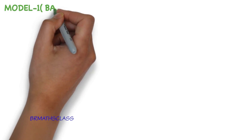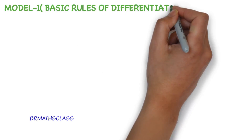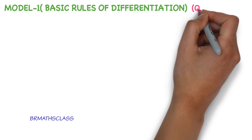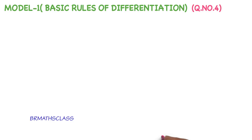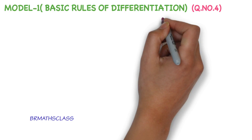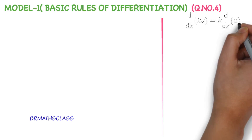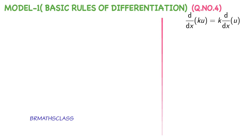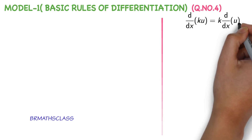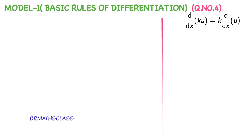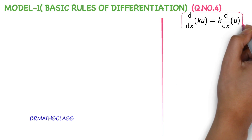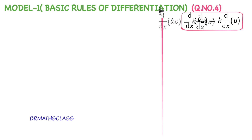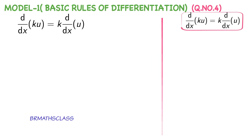Model number 1: Basic Rules of Differentiation. This is question number 4 in this model 1. In this class, we are going to learn how to apply this formula: d by dx of ku equals k into d by dx of u. That means the derivative of ku, where k is constant — take the constant outside and differentiate the function only. d by dx of ku is k into derivative of u.